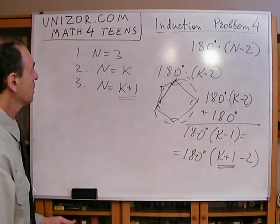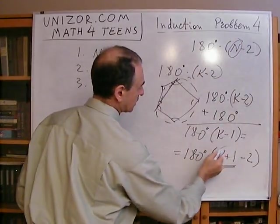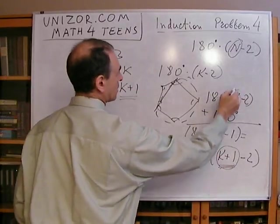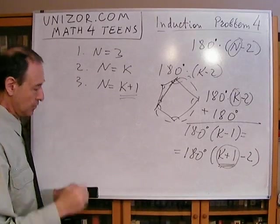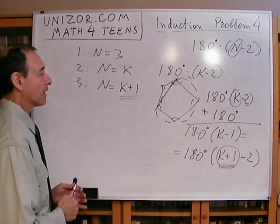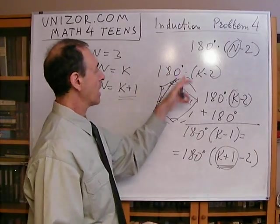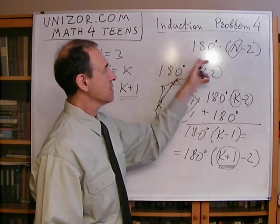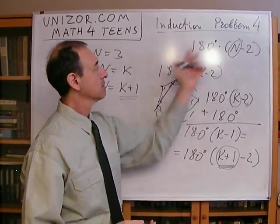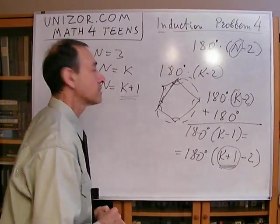So the formula is exactly the same. I substituted n with k plus 1 here, with k there. The formula is exactly the same, so the formula holds, and that basically proves this fact that for any n-sided convex polygon, the sum of all internal angles is 180 times n minus 2. That concludes it. Thank you very much.